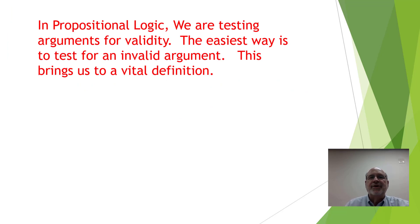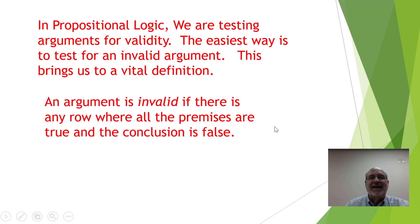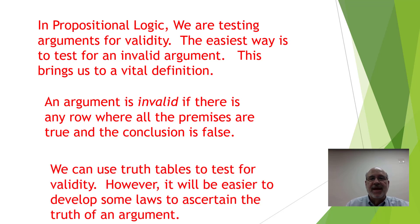The easiest way is to look for an invalid argument, and this brings us to a vital definition. An argument is invalid if there is any row — any row at all — where all the premises are true and the conclusion is false. We could use truth tables to test for validity.